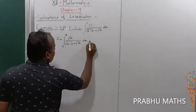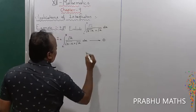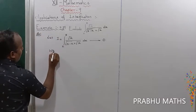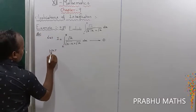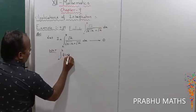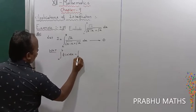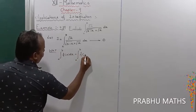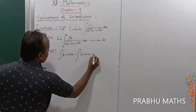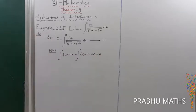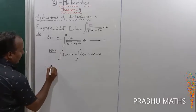This is considered equation number 1. We know the property of integration: integral from a to b of f(x) dx is equal to integral from a to b of f(a + b - x) dx.